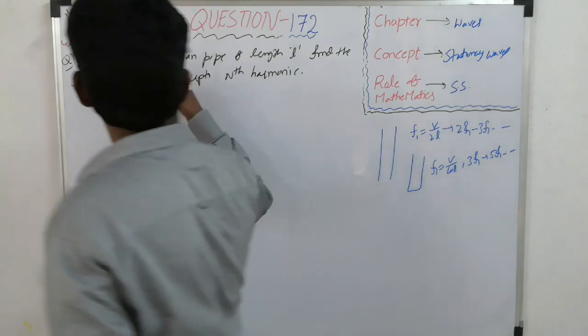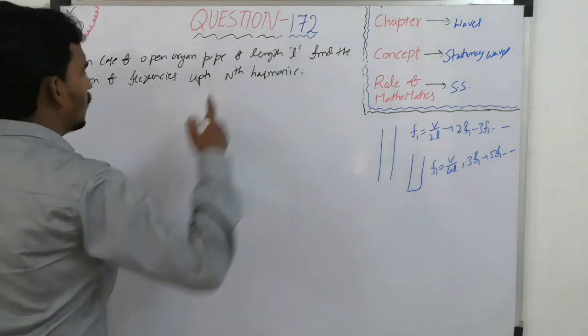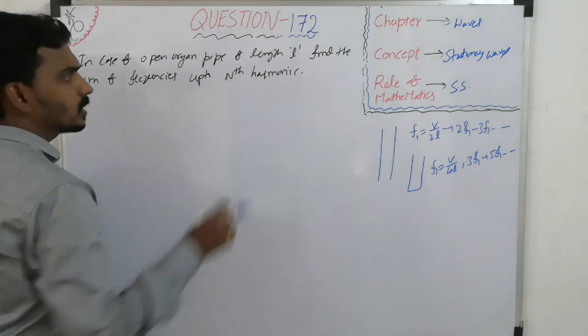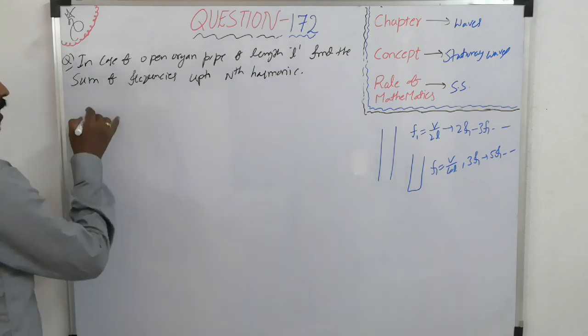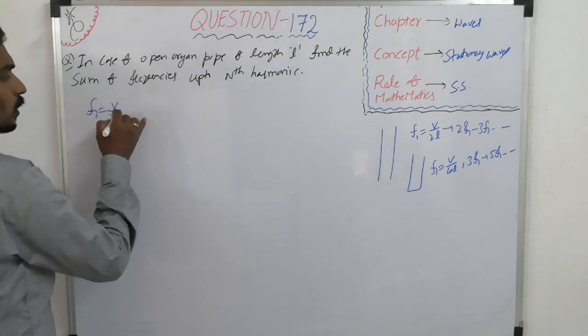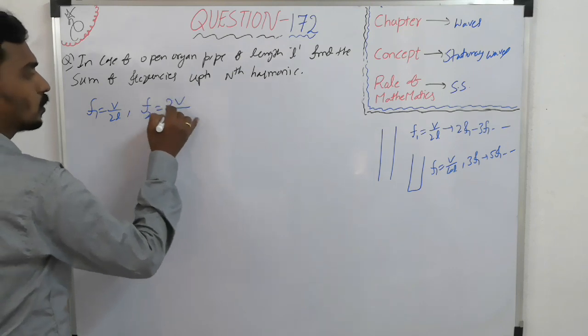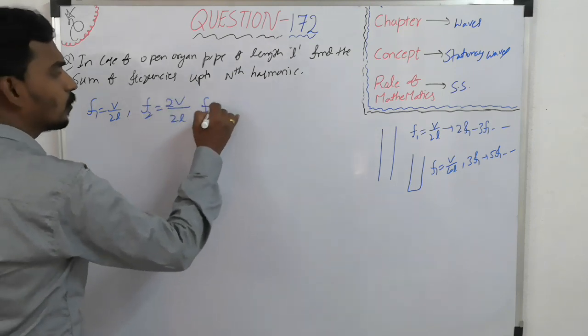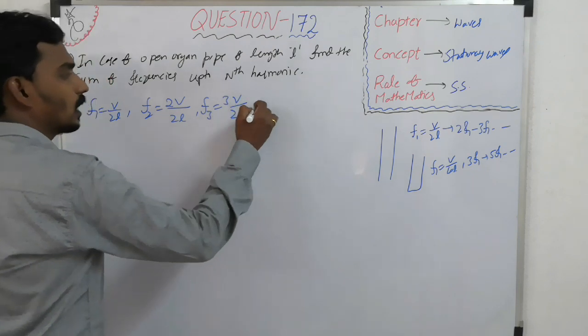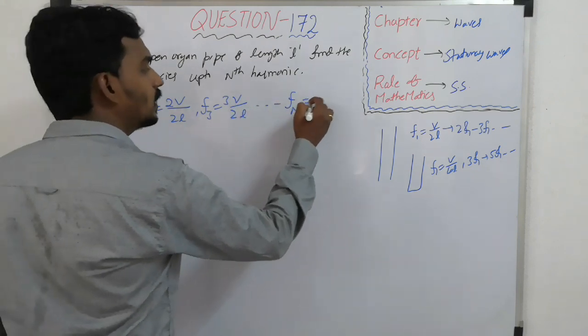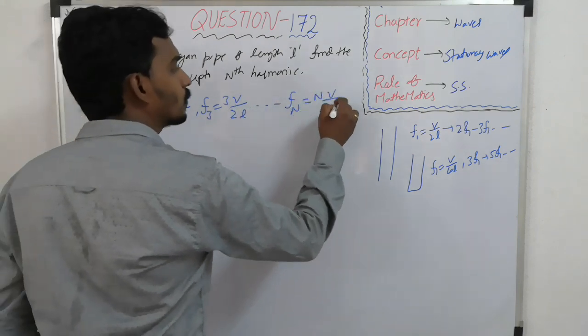Now, in case of an open organ pipe of length L, find the sum of frequencies up to nth harmonic. Fundamental is V by 2L. Then, the second harmonic is 2 times V by 2L, third harmonic is 3 times V by 2L, and so on. Nth harmonic means n times V by 2L.